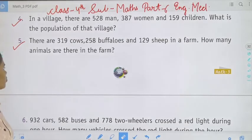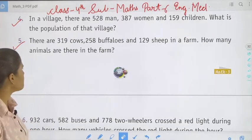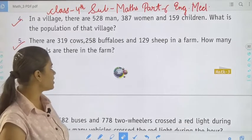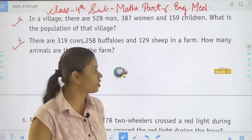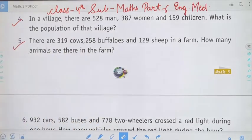In a village, there are 528 men and 387 women and 159 children. What is the total population of that village?